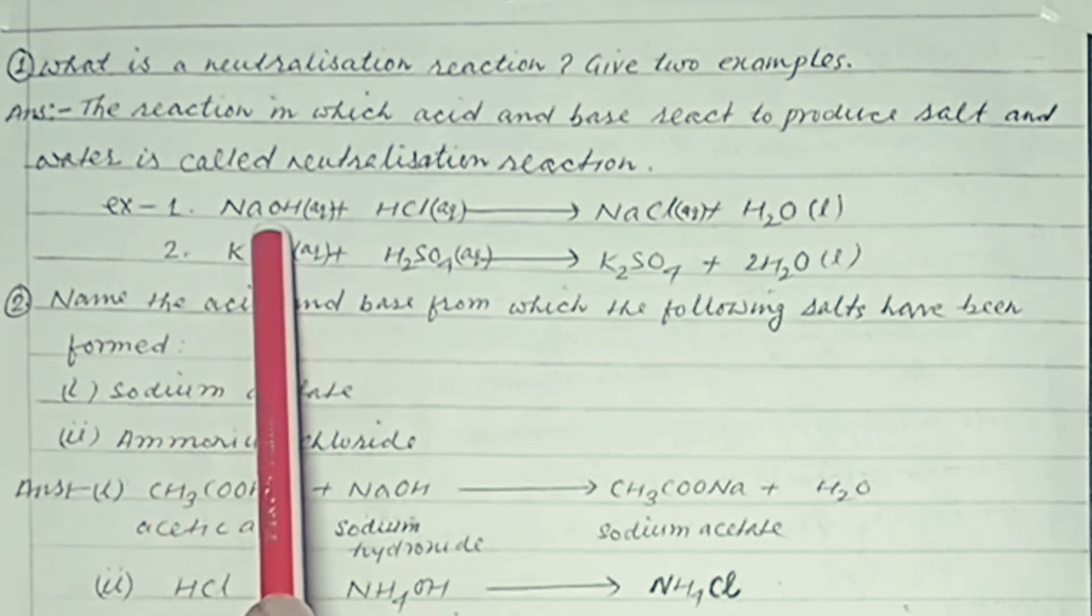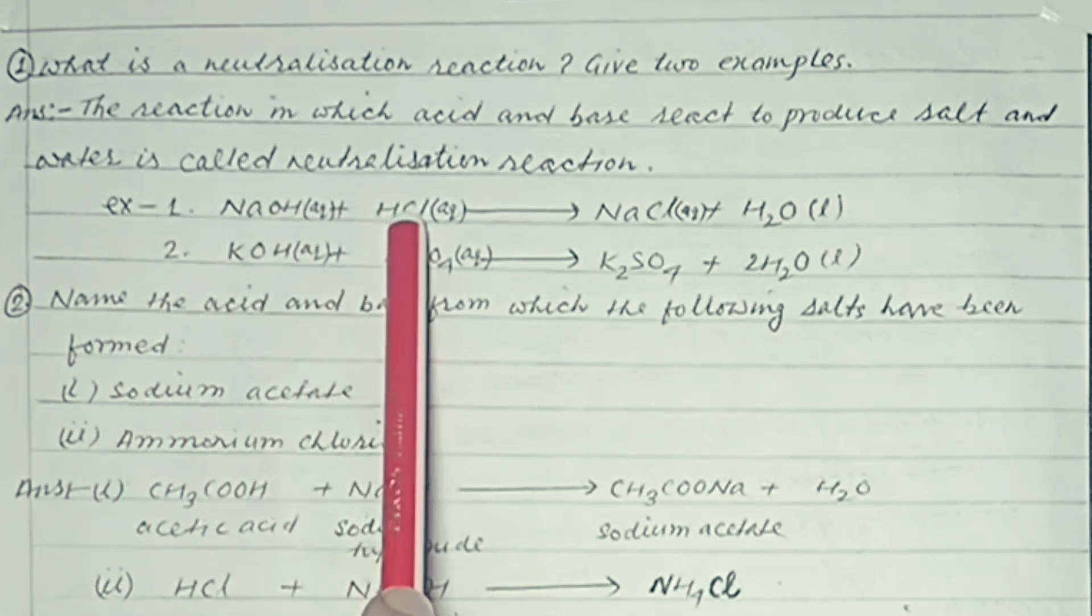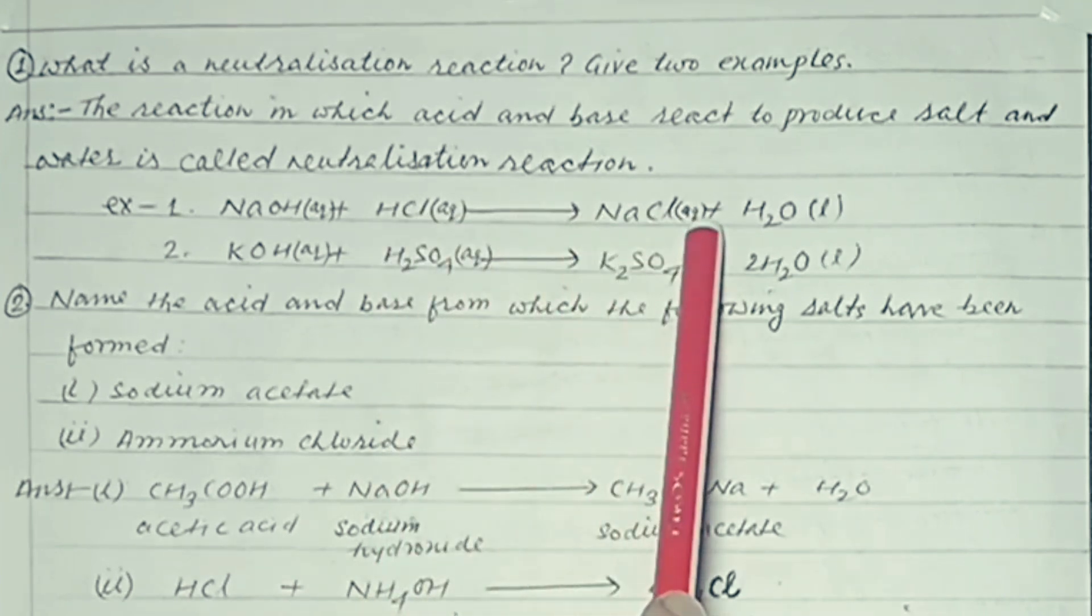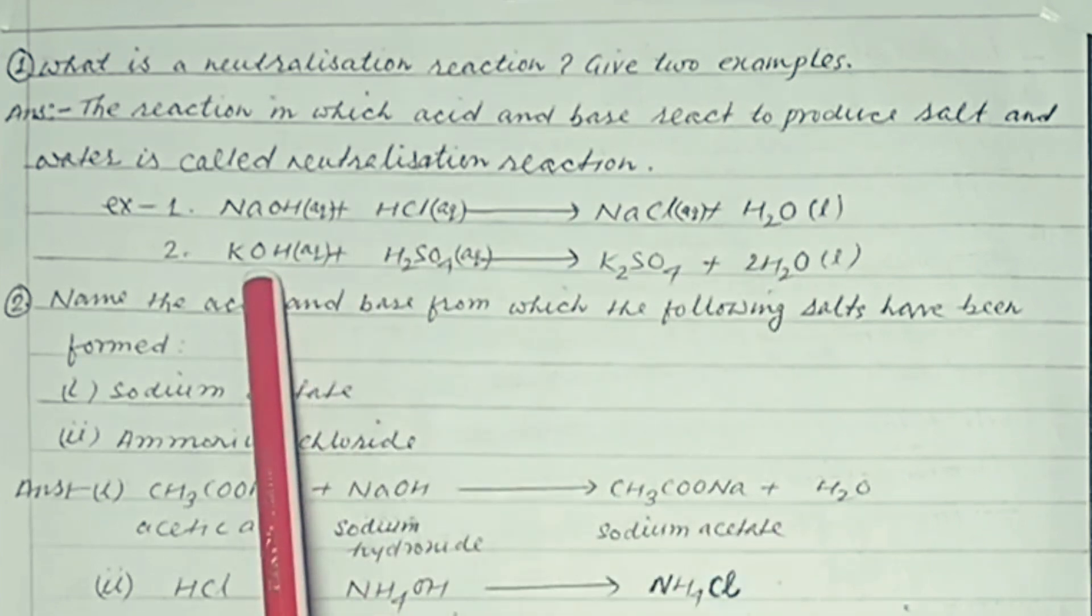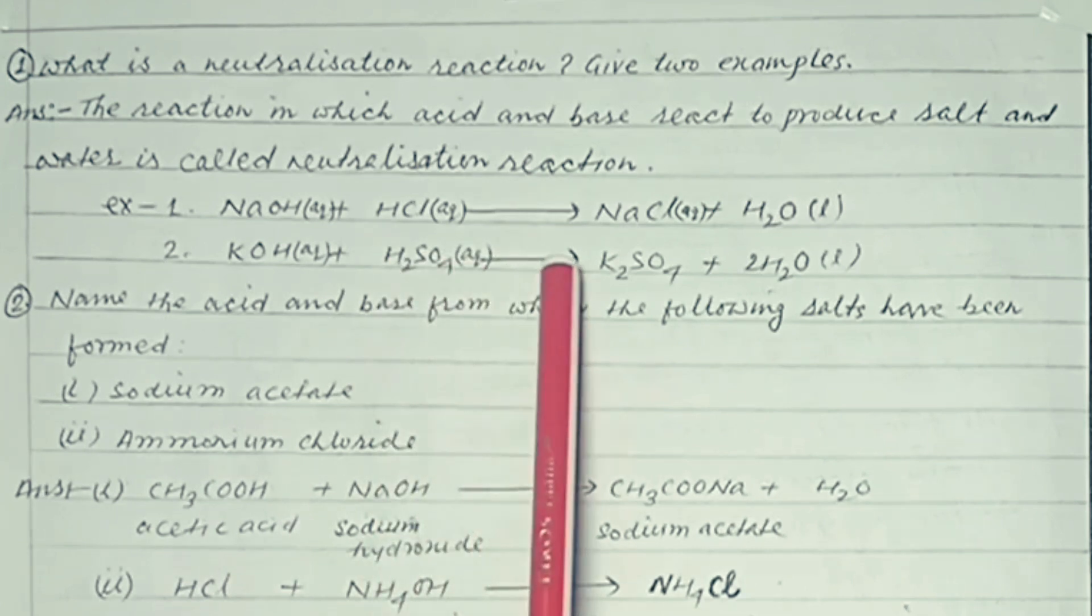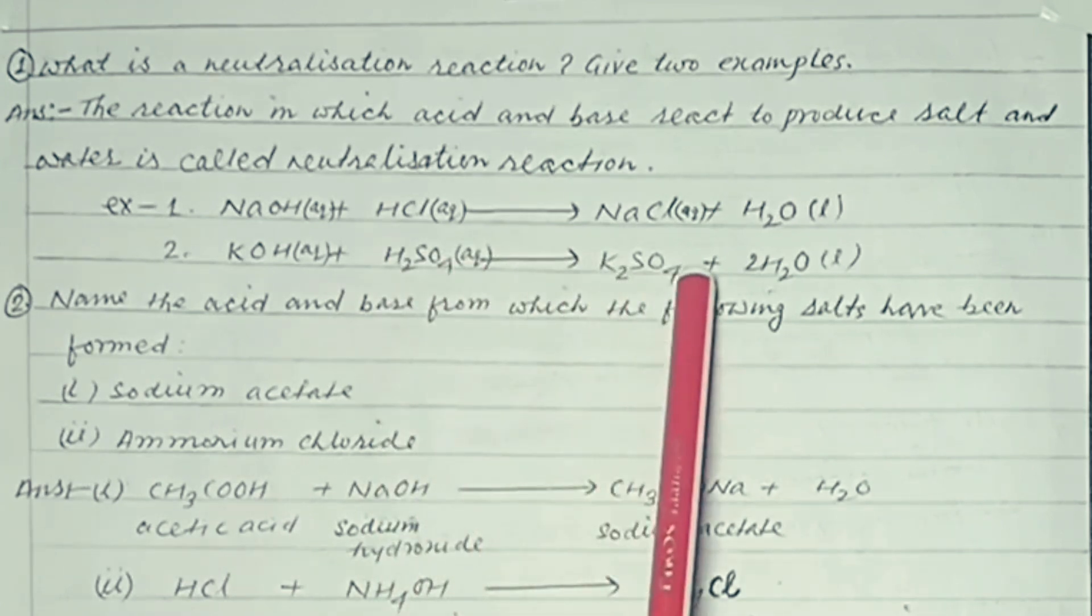Example, sodium hydroxide plus hydrochloric acid gives sodium chloride plus water. Potassium hydroxide plus sulfuric acid gives potassium sulfate plus water.